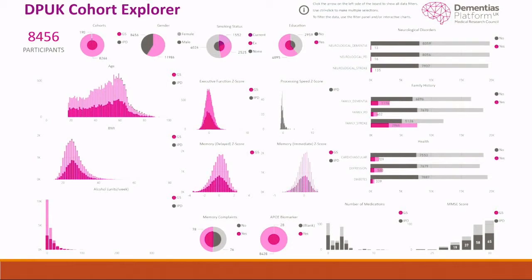We are also busy launching, by the end of this month, a new tool: the DPUK Cohort Explorer. After standardizing variables across our cohorts, we are going to harmonize a select number of 30 variables. These key variables will be for data visualization and will include family history, neurological disorders, cognition, BMI, and APOE. Researchers will be able to visualize these in an interactive tool. This is the first time we've publicly been able to show this tool — that's why it's a screenshot.